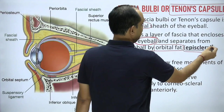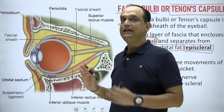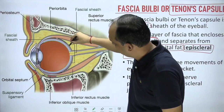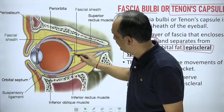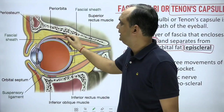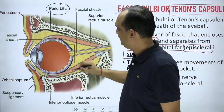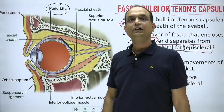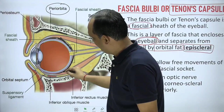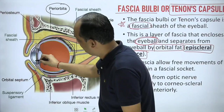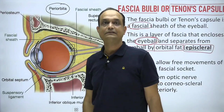The gap between the tenons capsule and the eyeball where you have orbital fat is known as the episcleral space. In the diagram you can see the eyeball covered by a layer — that layer is the tenons capsule. The periorbita is the periosteum lining the orbital bones, while the tenons capsule is the facial sheath covering the eyeball. This capsule is not complete — it is deficient anteriorly and also has defects posteriorly.